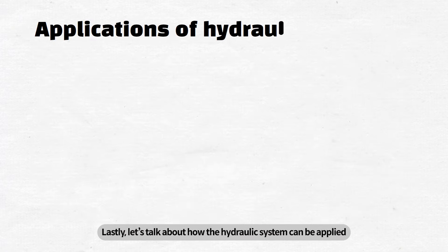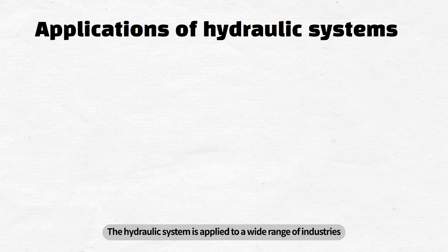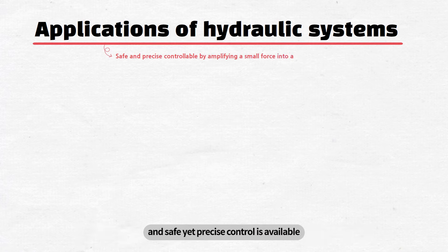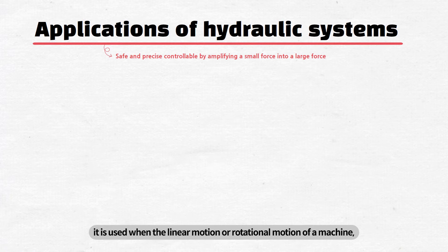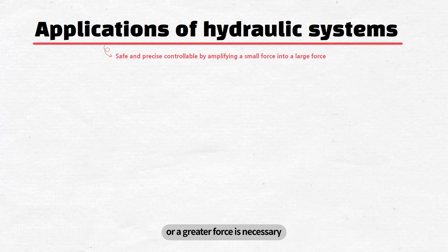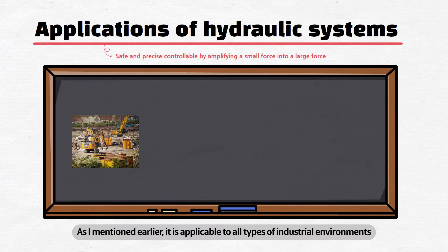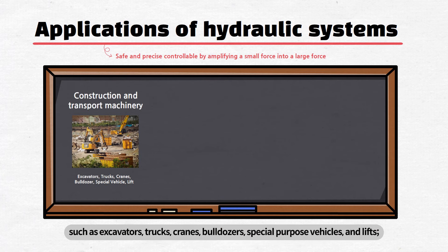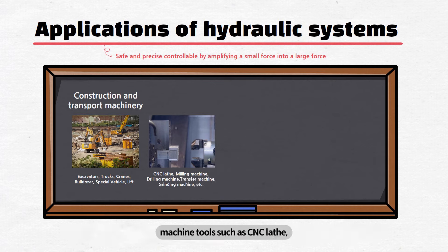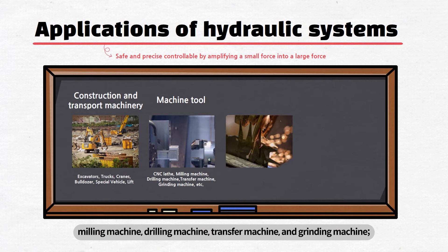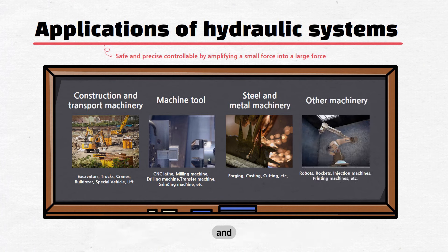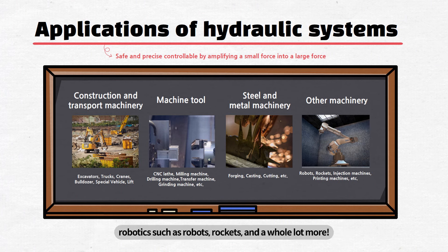Lastly, let's talk about how the hydraulic system can be applied. The hydraulic system is applied to a wide range of industries since it can be amplified to a larger force with only a small amount of force and safe yet precise control is available. Typically, it is used when linear motion or rotational motion of a machine or a greater force is necessary. It is applicable to all types of industrial environments, from construction and transportation systems such as excavators, trucks, cranes, bulldozers, special-purpose vehicles, and lifts, to machine tools such as CNC lathe, milling machine, drilling machine, transfer machine, and grinding machine, steel and metal machinery such as forging, casting, and cutting, and robotics such as robots, rockets, and more.